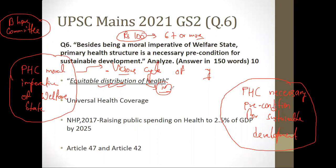The fourth point is that PHC promotes equitable distribution of health. If PHCs are properly developed, even someone from a poor stratum can get their health taken care of. If government hospitals are underdeveloped, people have to go to private care which they may not afford — that is inequitable distribution. Proper PHC promotes equitable distribution of health, proving it is a moral imperative of welfare state.